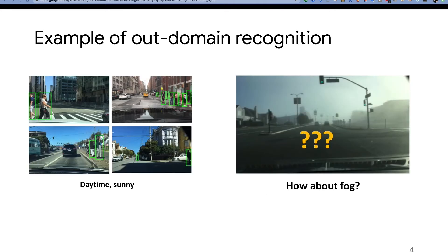Here is an example of out-of-domain recognition. On the left, we can train a pedestrian detector for daytime, sunny pictures. But when we test such a detector on evening pictures, night pictures, or in this case, fog, we cannot guarantee such detection will work very reliably. As a result, we feel out-of-domain recognition is an important problem and that's the topic we're going to discuss today.